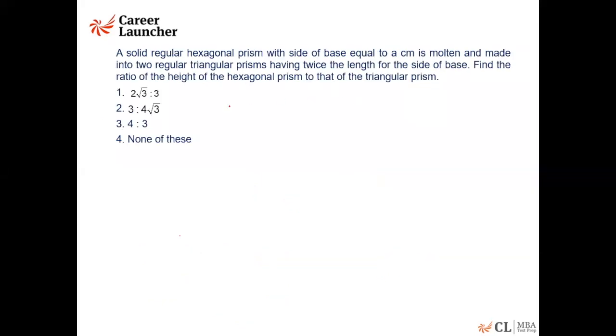A solid regular hexagonal prism with the side of base equal to a centimeters is molten and made into two rectangular prisms having twice the length of the side of the base. Find the ratio of the height of the hexagonal prism to that. So let's say we have a hexagonal prism. Let me draw a hexagonal prism here.